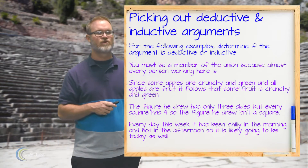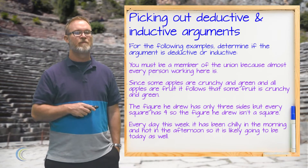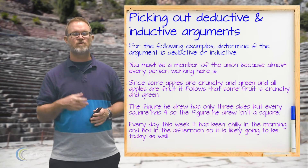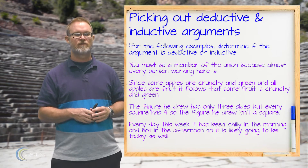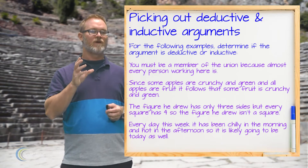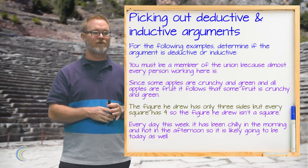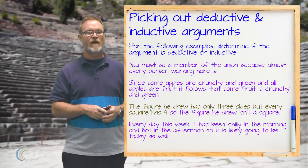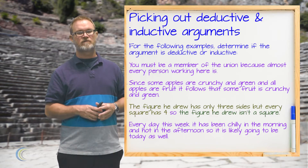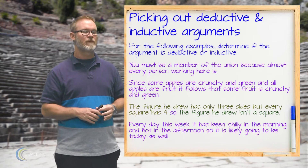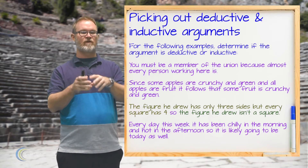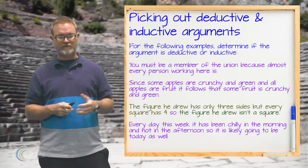Next: the figure he drew has only three sides, but every square has four, so the figure he drew isn't a square. This is also deductive. Given that the figure has only three sides and every square has four, it necessarily has to follow that what he drew can't be a square. Because that conclusion necessarily follows, it's a deductive argument.